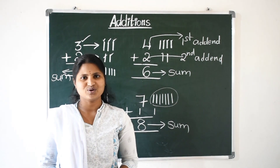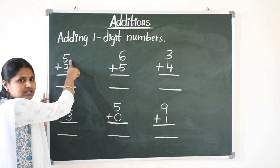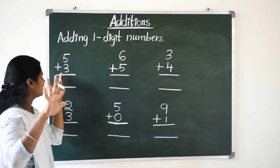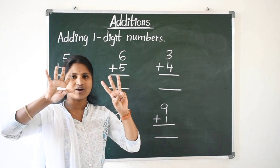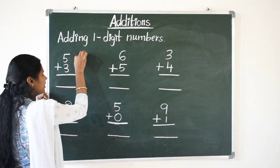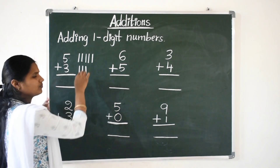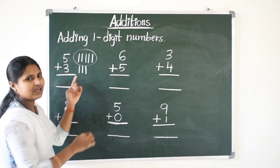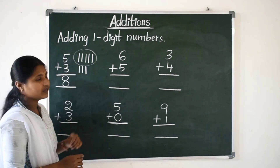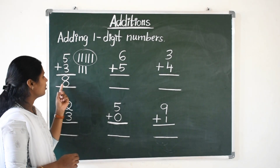Now we will do some more additions. Here we have some more questions: adding one digit numbers. Here first addend is a one digit number and second addend is also a one digit number. Five means open your five fingers and three means open your three fingers. Now count all: five fingers and three fingers. Five after six, seven, eight. Or if you have any doubts, just draw the lines: one, two, three, four, five, and three means one, two, three. Five plus three is eight. First addend is five, second addend is three, and the sum is eight.